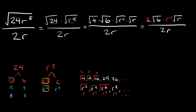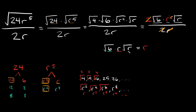There are things we can cancel out. We have a 2 on top and a 2 on the bottom, so those cancel. Then we have an r on the bottom and two r's on top — that one r on the bottom cancels one of the r's on top, leaving just one r. So on top we're left with the square root of 6 times r times the square root of r, with nothing in the denominator. Combining the 6 and r under one radical, your final answer is r times the square root of 6r.